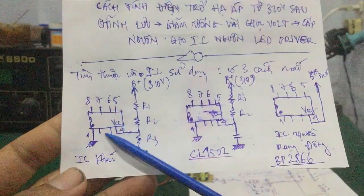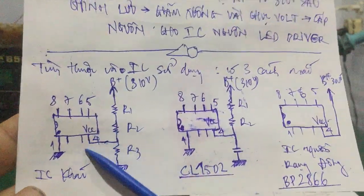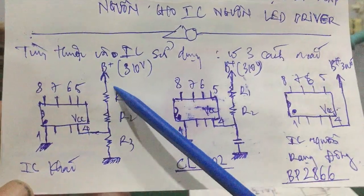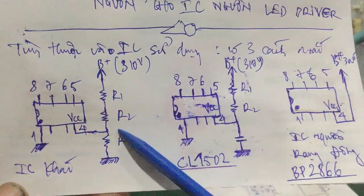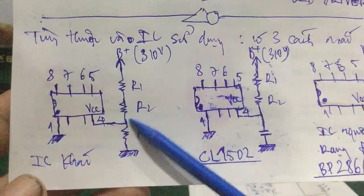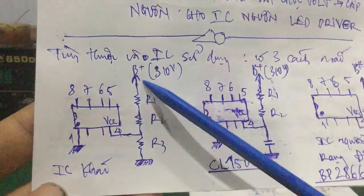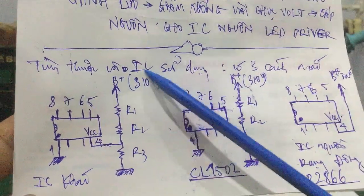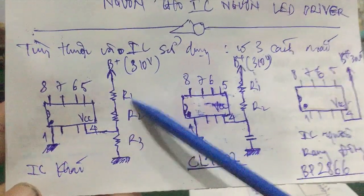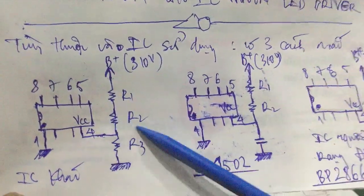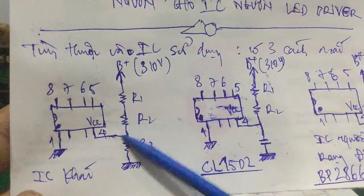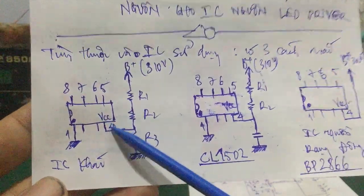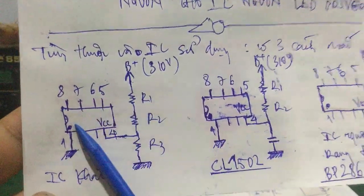Đối với những IC có mã H1, ở đây nó sẽ có 3 con điện trở R1, R2, R3. Ba con điện trở này tạo thành mạch cầu phân áp, nối lên nguồn B cộng - B cộng của mình là điện áp 310V DC sau chỉnh lưu. Thì R1, R2, R3 này là cầu phân áp, nó sẽ gây hạ áp, cấp nguồn VCC cho chân số 4 của IC. Đây là loại thứ nhất.